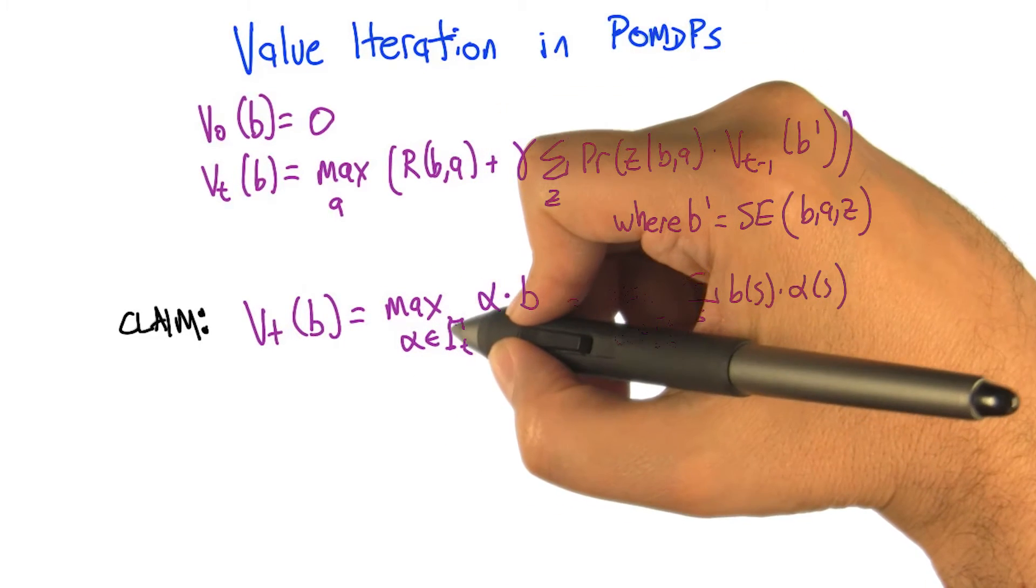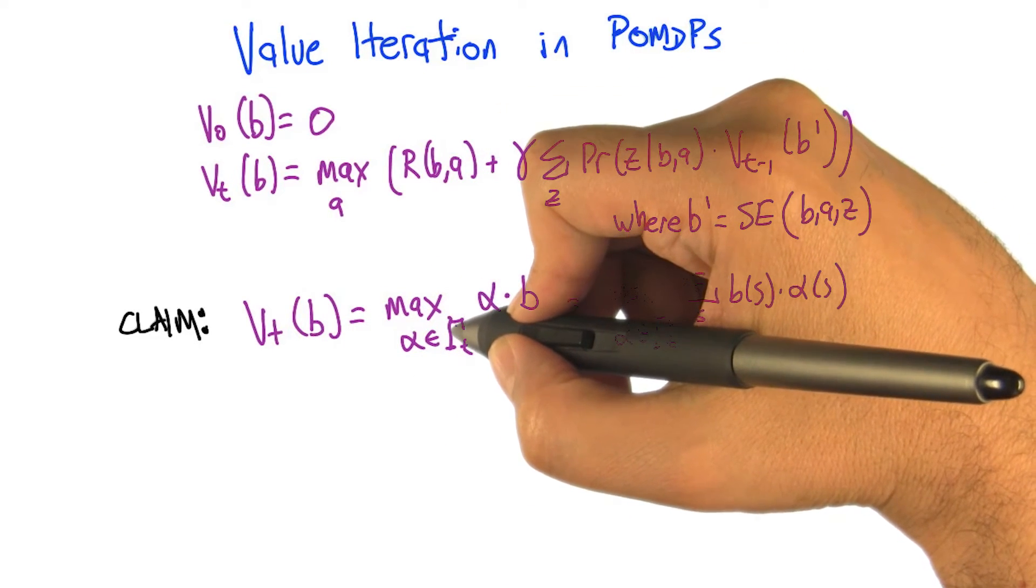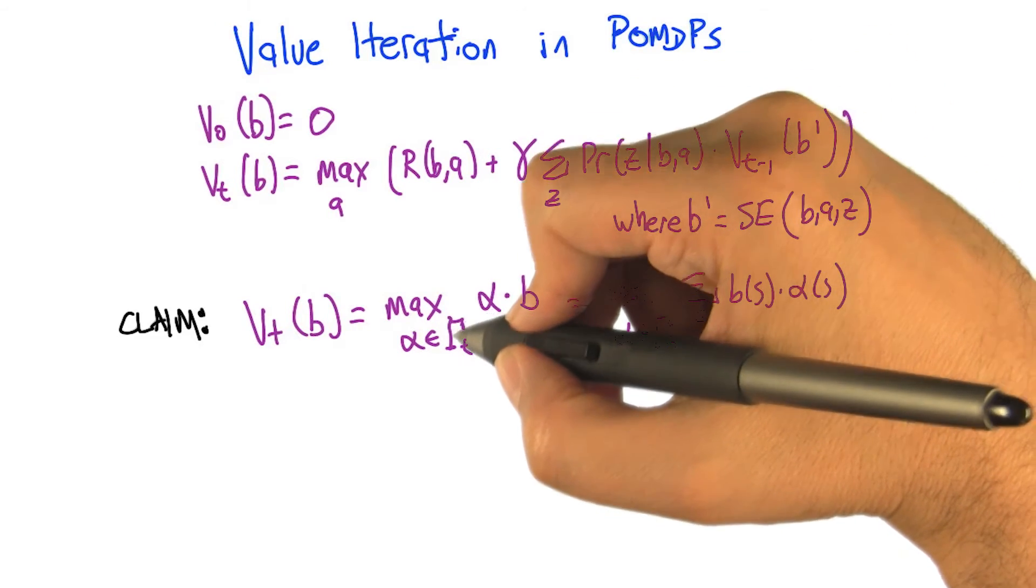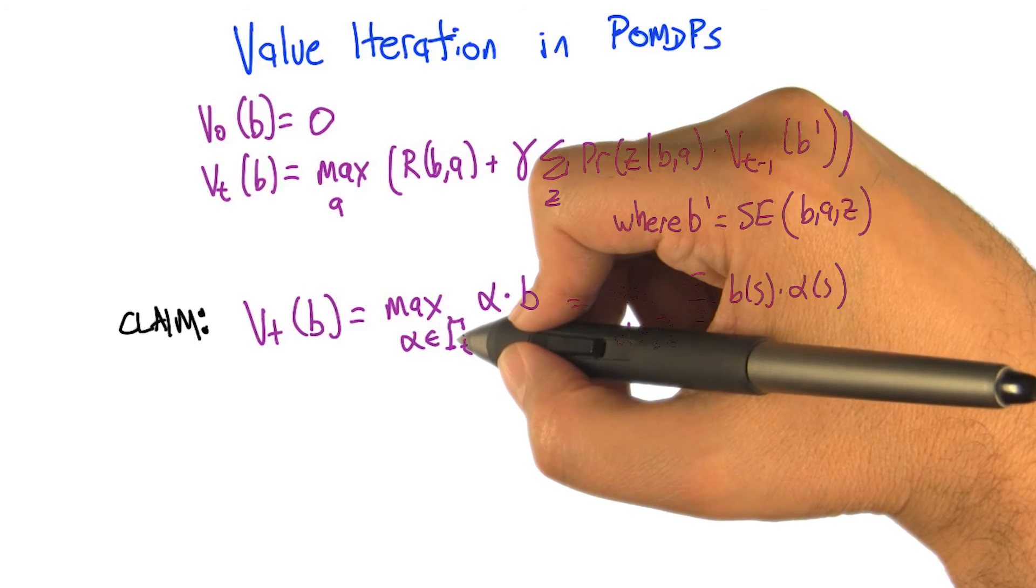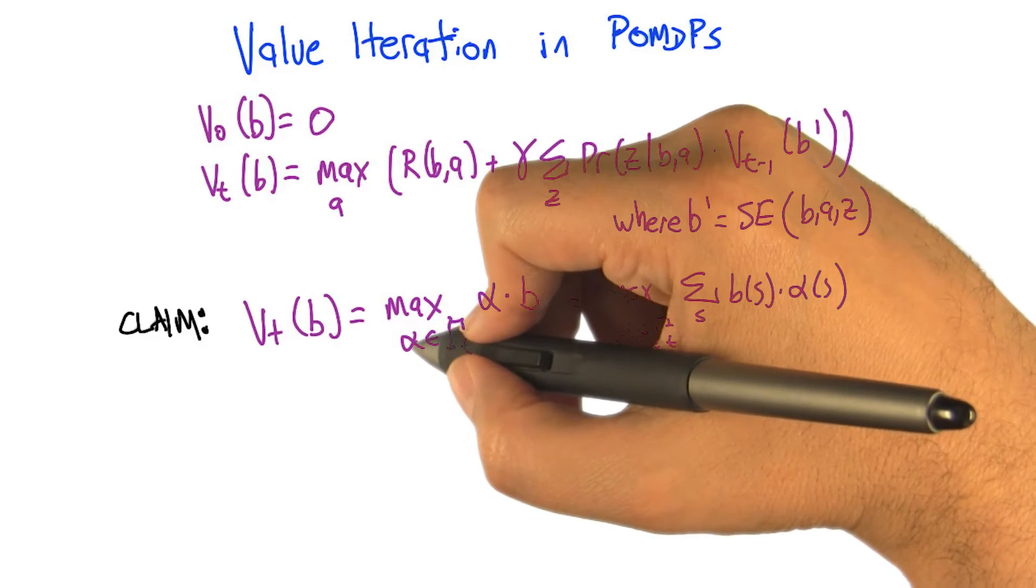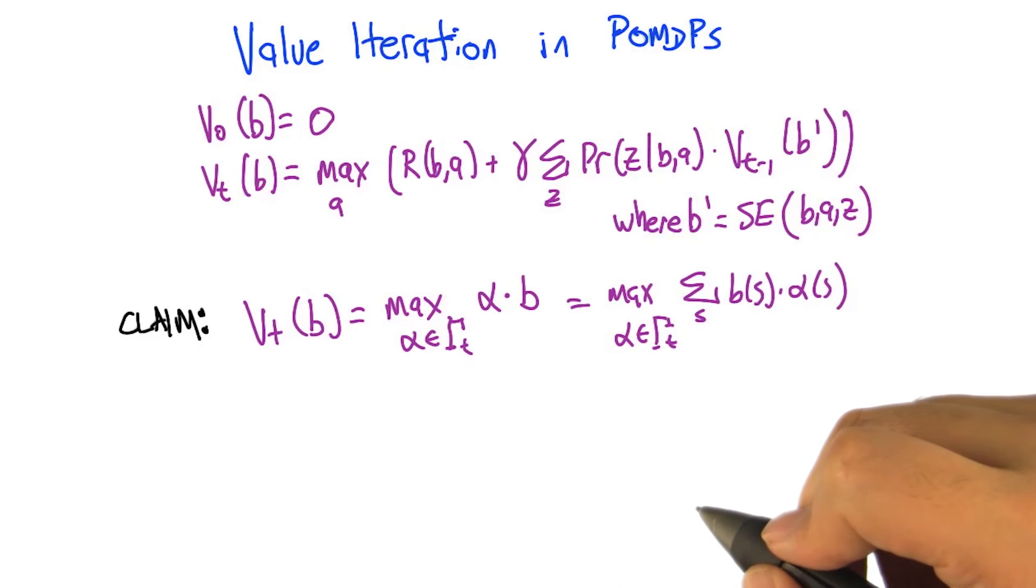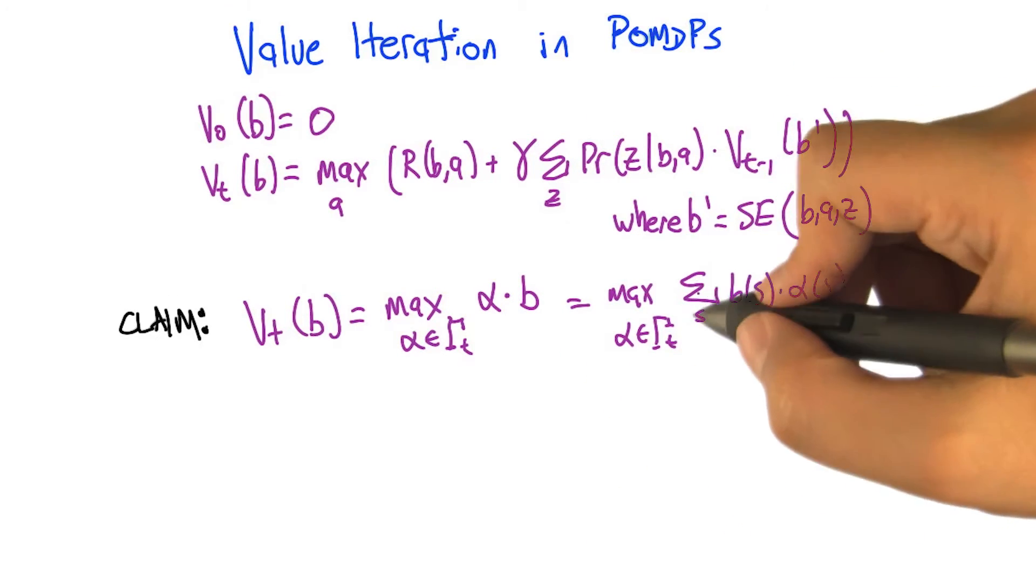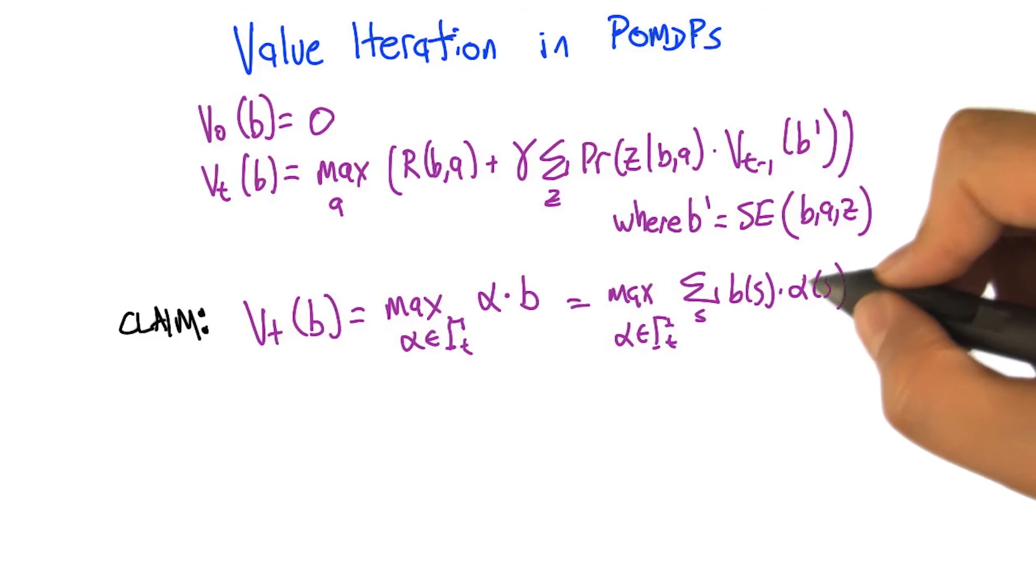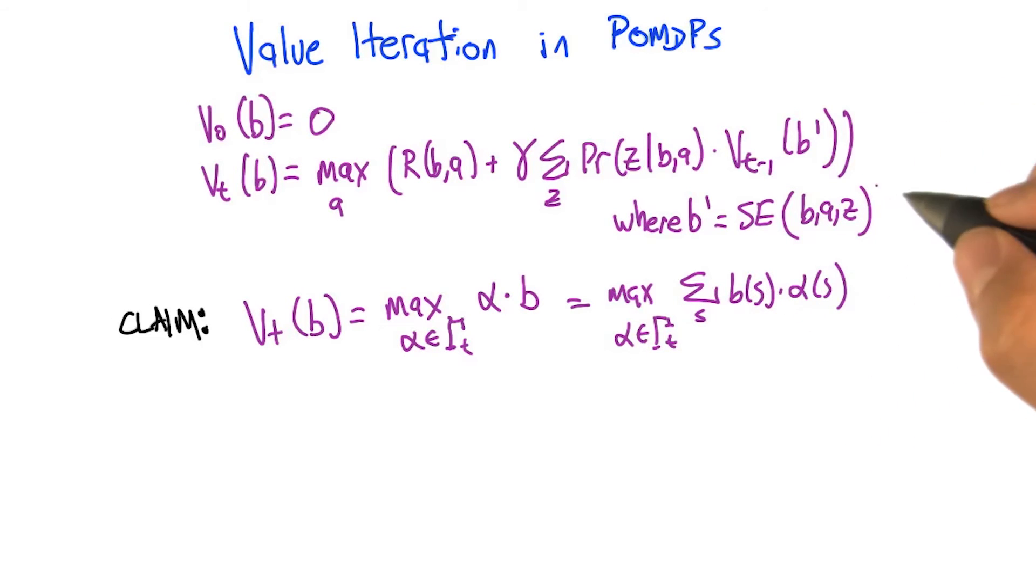In particular, the maximum over some set of vectors, gamma sub t, that we're going to have to deal with later. But the point is that it's a finite set of vectors. The maximum of the dot product of the vectors in that set with the belief state. Where a dot product is really just the sum over all the states, the weighted probability being in that state times this alpha of s.